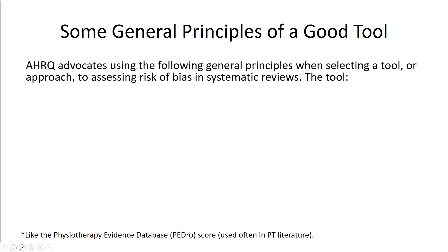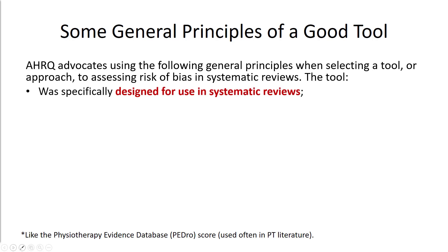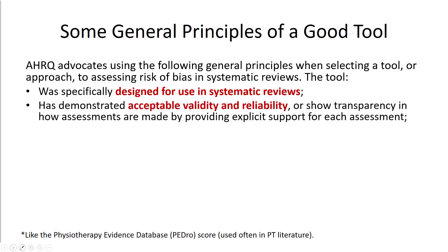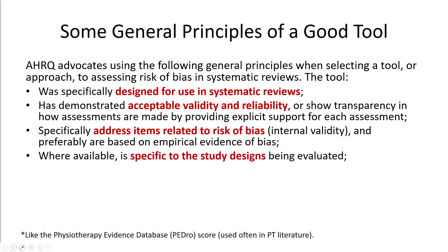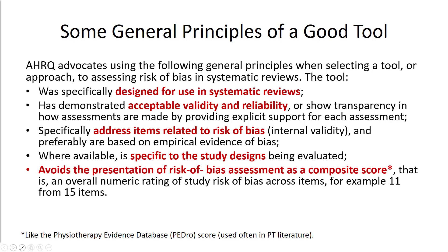What are some principles of good tools? AHRQ advocates using the following general principles when selecting a tool for assessing risk of bias in systematic reviews: the tool should be specifically designed for use in a systematic review; it should have demonstrated acceptable validity and reliability — the tool itself has been researched, not just used in research; it should specifically address items related to internal validity, preferably based on empirical evidence; it should be specific to the study designs being evaluated; and it avoids presenting risk of bias as a composite score — for example, 11 out of 15 items.